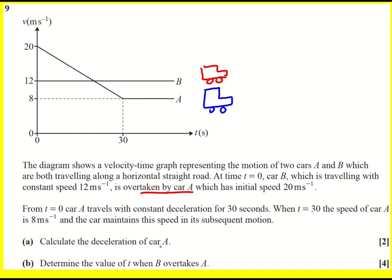To start with, we're asked to calculate the deceleration of car A. So we could play it safe here and write down SUVAT. Time taken during the deceleration is 30 seconds, the initial velocity is 20, and the final velocity is 8.